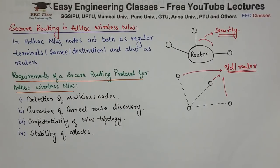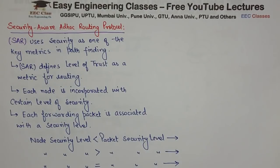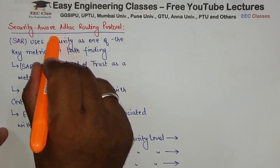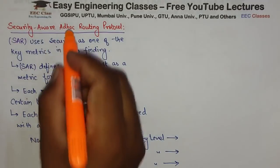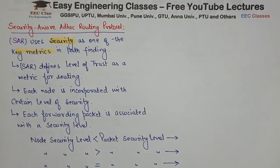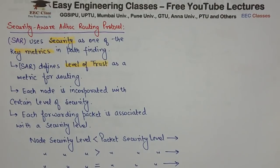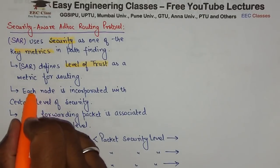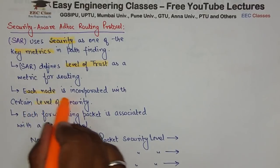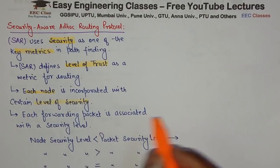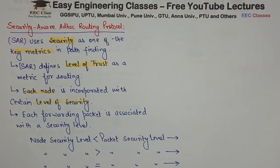Now we will look at the Security Aware Routing protocol, known as SAR. This protocol uses security as one of the key metrics in pathfinding. The security metric here is the level of trust: each node is assigned a certain level of trust, and each forwarded packet is associated with a security level.